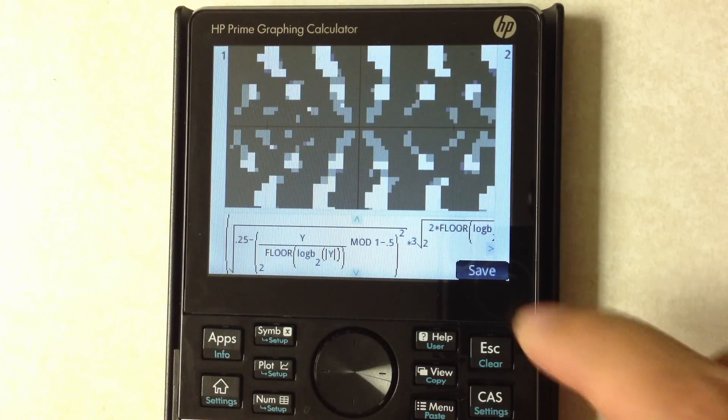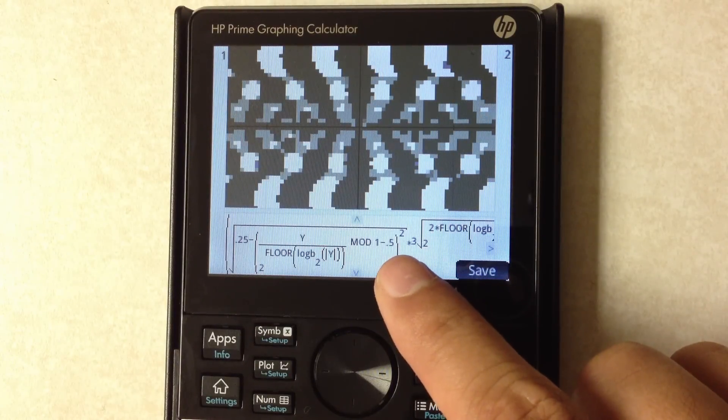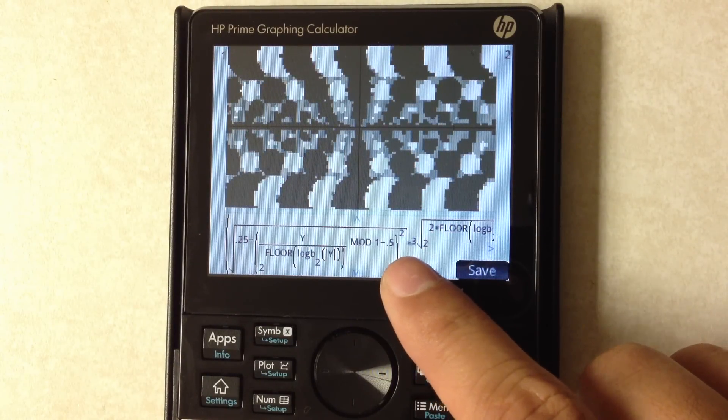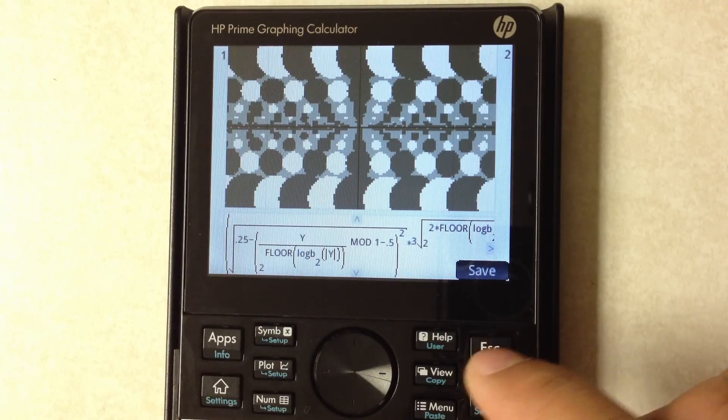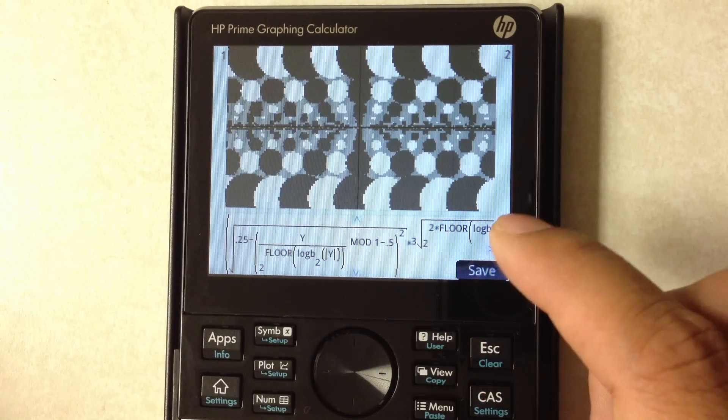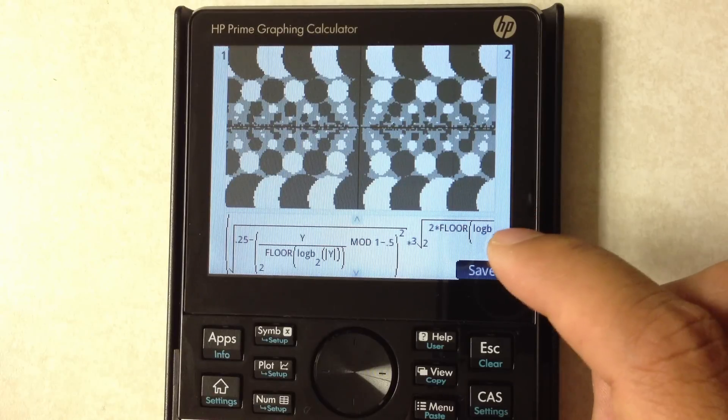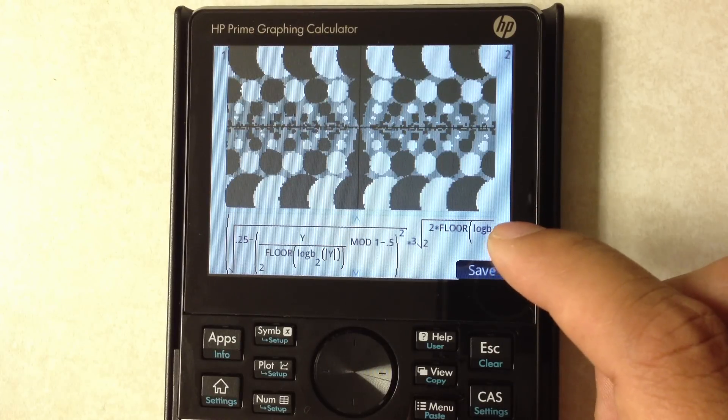So here we're graphing this crazy looking equation and it's doing this in grayscale mode. I'm going to interrupt this before it finishes, but all it's doing is it's graphing a family of inequalities and it uses different colors to represent those inequalities.